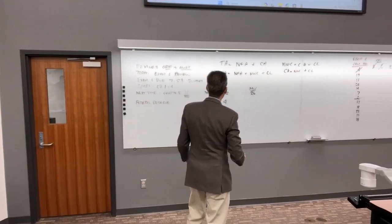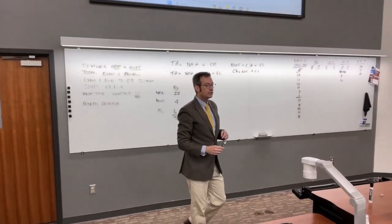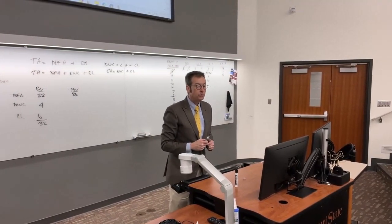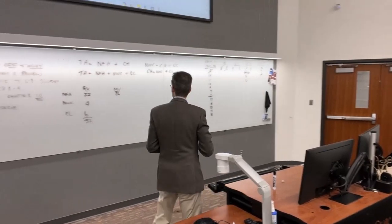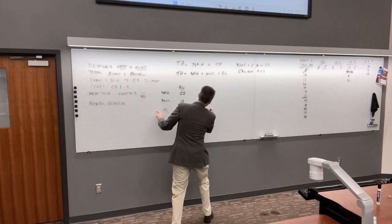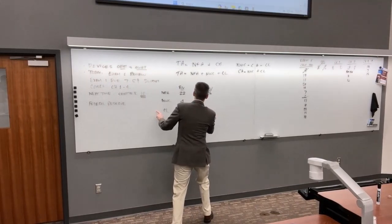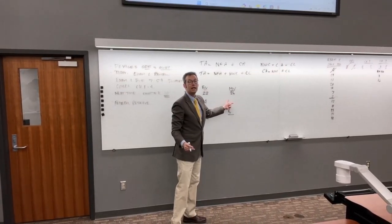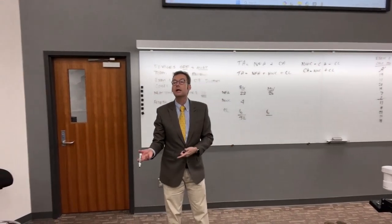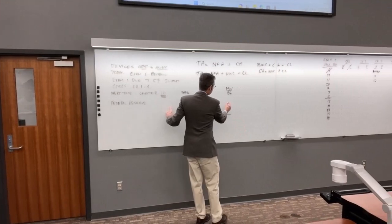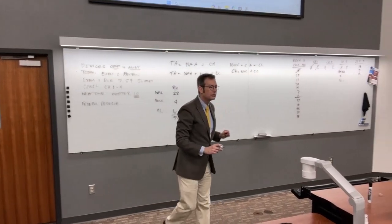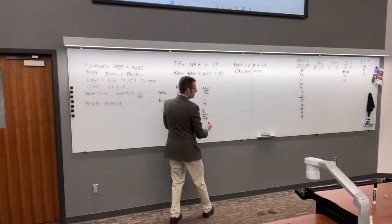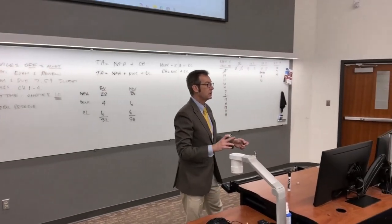Now what's the market value? If all current accounts were liquidated today, the company would receive $6 million in cash after paying $6 million in liabilities — that $6 million left over is the net working capital. So market NWC is also $6 million. Therefore market value is 26 + 6 + 6 = $32 book value and $38 market value.